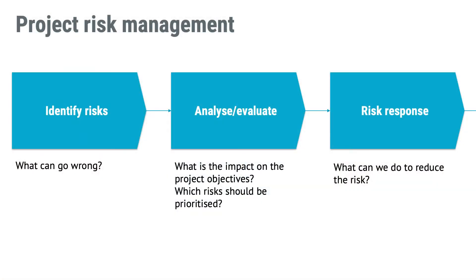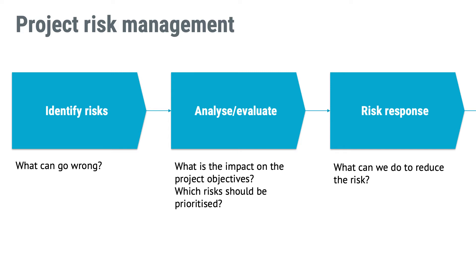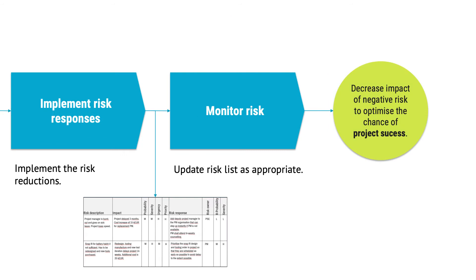The first thing to do is to identify the risks — that is, what could go wrong. Having identified what could go wrong, you should analyze and evaluate the risk to figure out what the impact might be and which ones to prioritize. Then figure out a response to the risk — what can you do to reduce it — and then implement the response. All of this is usually documented in tables similar to what's seen in this example, though obviously there would be a lot more rows than just two.